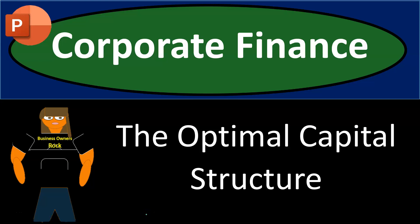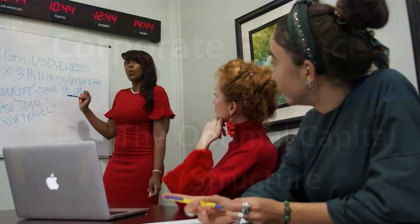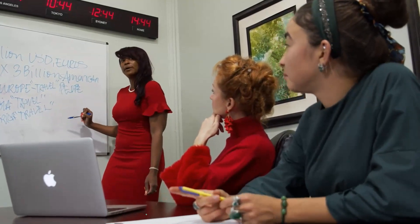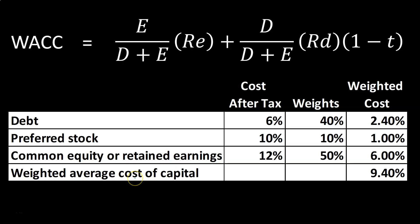Corporate finance presentation: the optimal capital structure. Here we are with our weighted average cost of capital, the WACC formula. We started off this section by introducing the WACC formula, thinking about it conceptually, and then going into some major components of this formula in more depth.